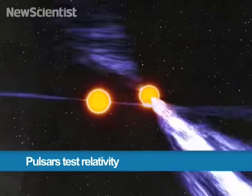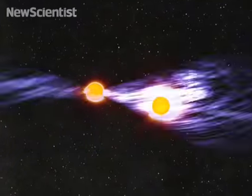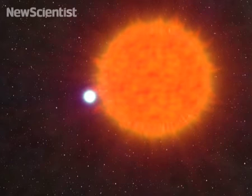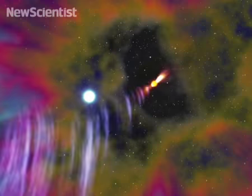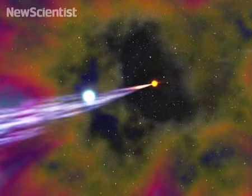This animation shows two pulsars orbiting each other. They're a kind of neutron star that form when a star explodes in a supernova. This leaves behind a highly magnetized neutron star that rapidly rotates.